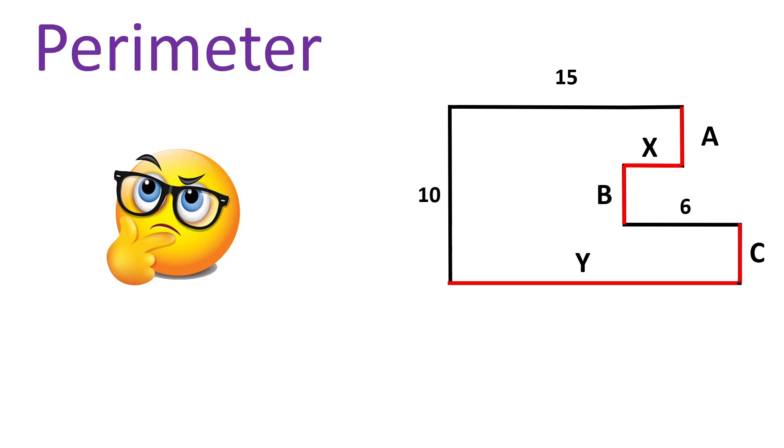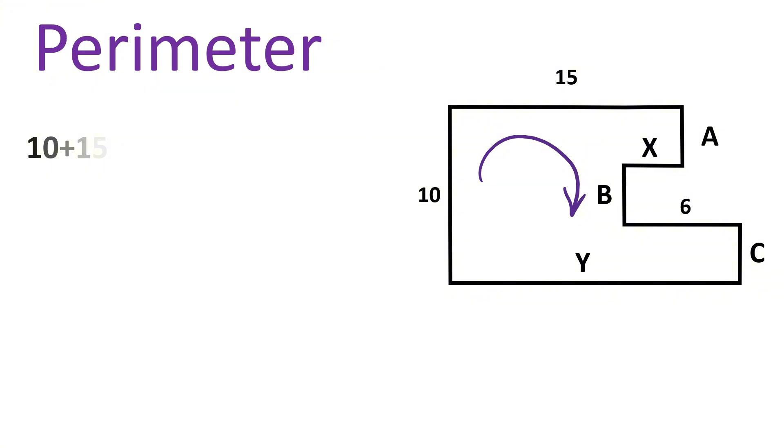So what will be the perimeter of this polygon? Let us move this way, so it will be 10 plus 15 plus A plus X plus B plus 6 plus C plus Y, right?